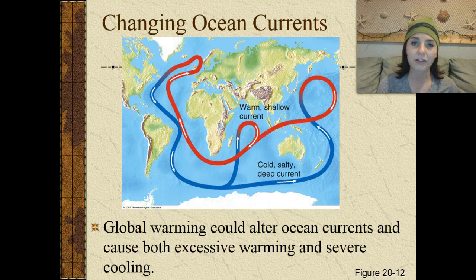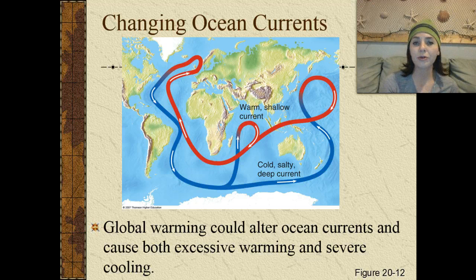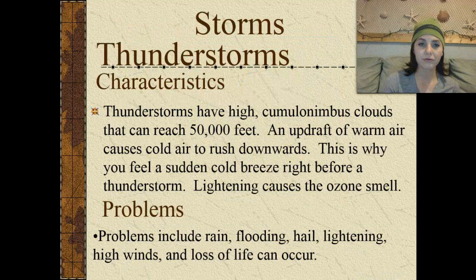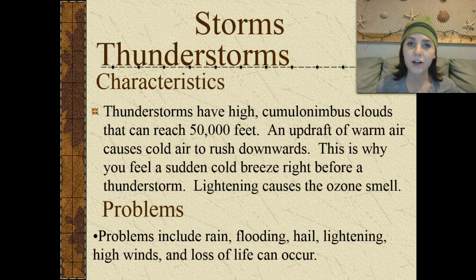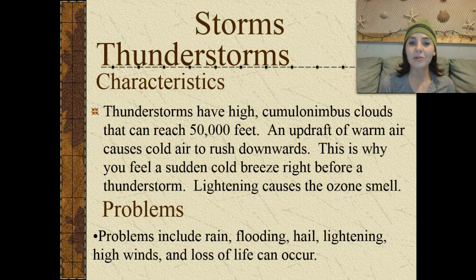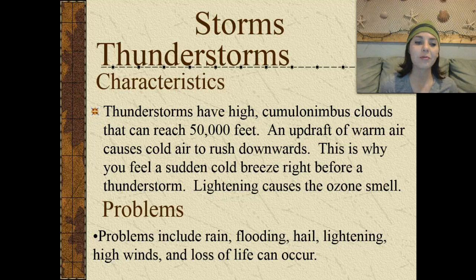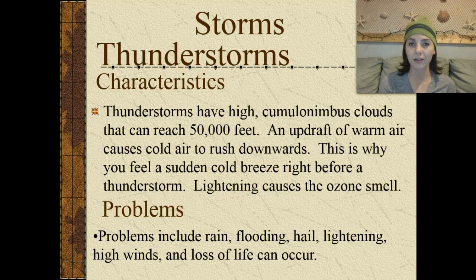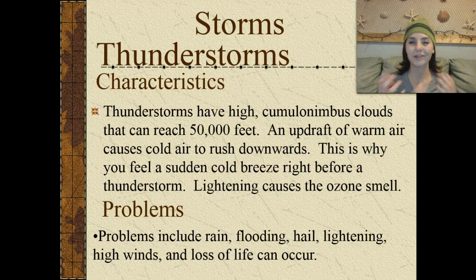Changing ocean currents are also a concern. Global warming could actually alter ocean currents and cause both excessive warming and severe cooling. Thunderstorms might actually be a result of this as well. Thunderstorms are characterized by high cumulonimbus clouds that can reach 50,000 feet. An updraft of warm air causes cold air to rush downwards — this is why you feel a sudden cold breeze right before a thunderstorm hits. And then lightning causes that ozone smell, so you can smell rain. That's pretty much what you're smelling.